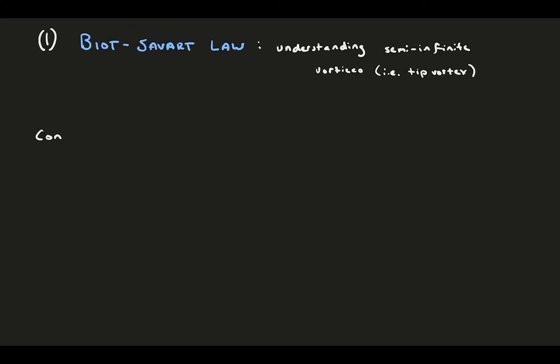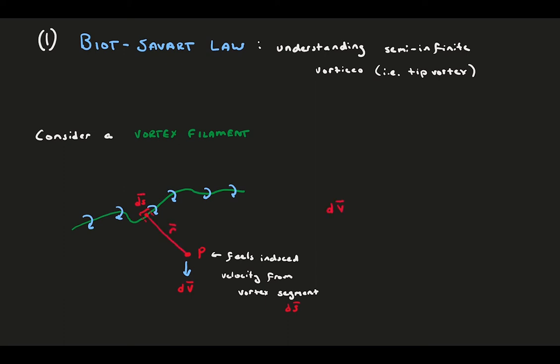Let's consider an arbitrary vortex filament. Label a point p some distance off of the filament. This point feels an induced velocity due to the neighboring vortex. Specifically, we get a delta v due to a segment of the filament delta s when point p is distance r from the vortex. To describe this velocity induced, we can use the Biot-Savart Law, which covers this. It's defined as follows.